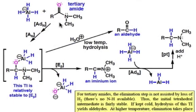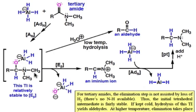Now let's see what happens when we switch from a primary or secondary amide to the tertiary amide shown here. The first two steps in the mechanism are the exact same, wherein hydride attacks in an AdN step, and then the tetrahedral intermediate coordinates to the Lewis acid to create this intermediate. The difference is that there are no protons on the nitrogen that can facilitate beta elimination through the loss of hydrogen gas.